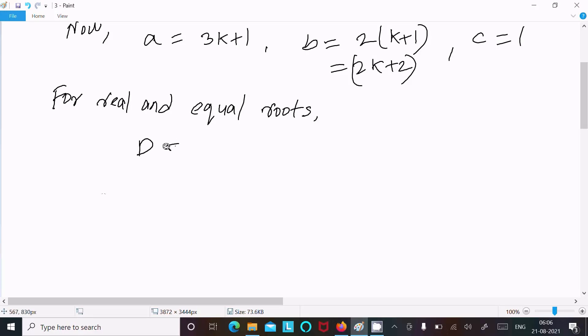The D value is now b² - 4ac = 0. So b square, we can write (2k+1)² minus 4 times a, which is (3k+1), times c. C value is now 1.